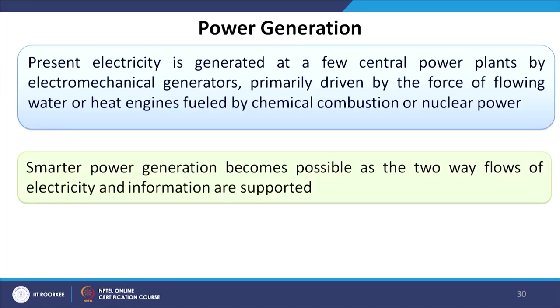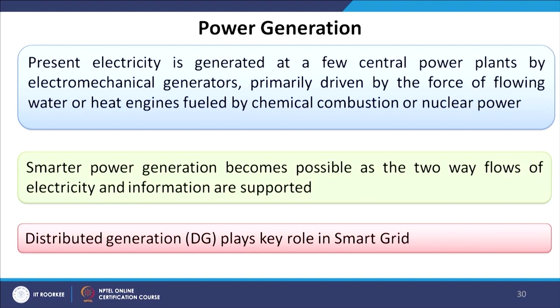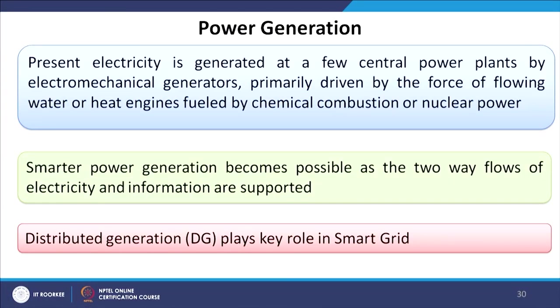Smarter power generation becomes possible when two-way flow of electricity and information is supported. Currently it is mainly demand-driven, but if you can do both-side communication, the generation is based on expected demand and the demand can drive the generation as it desires. Distributed generation is a very important component of smart grid power generation that can play a key and major role.